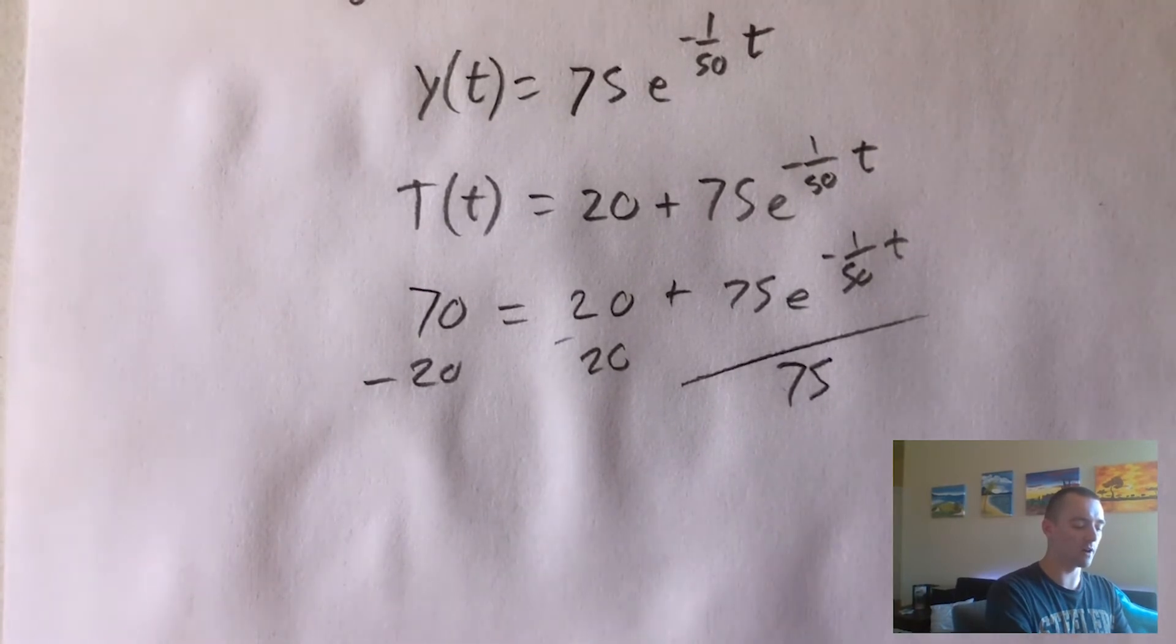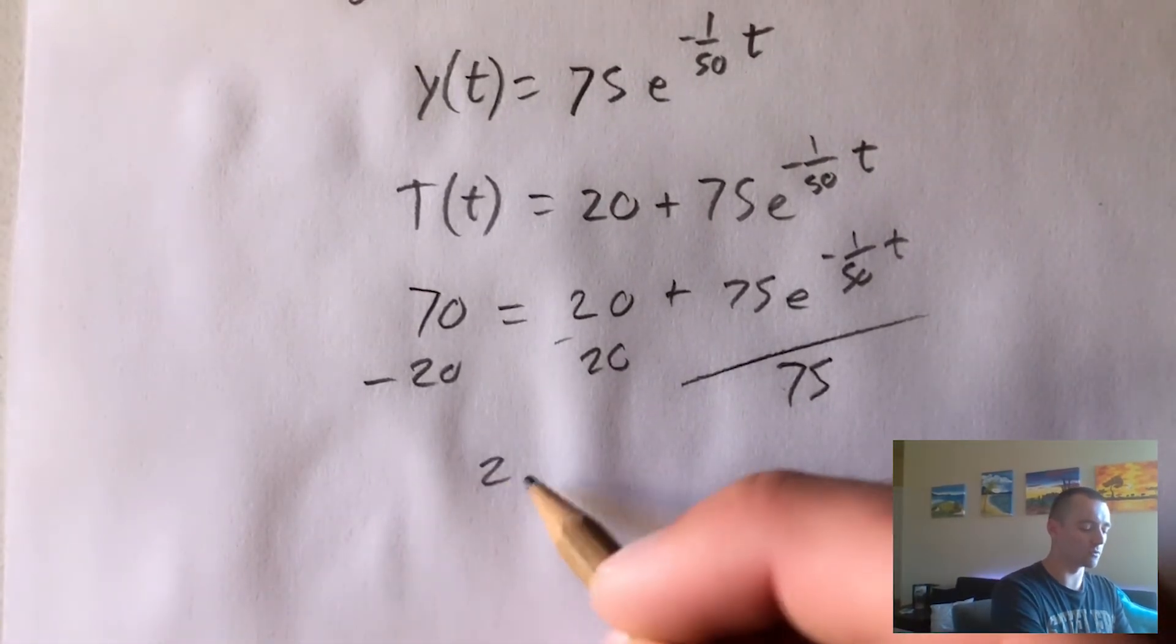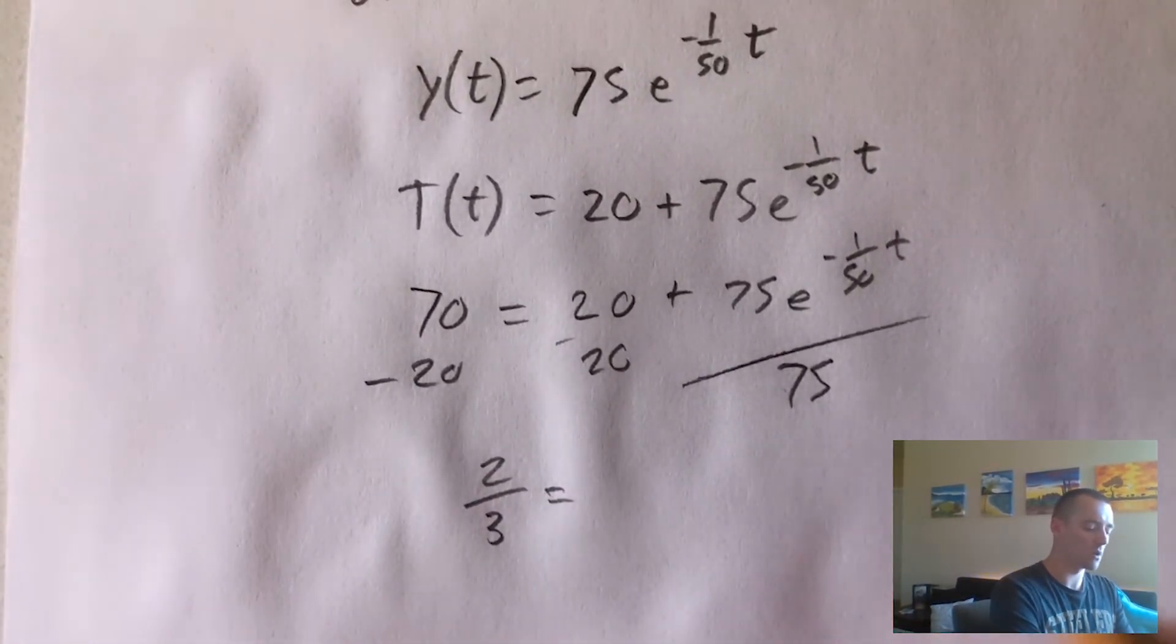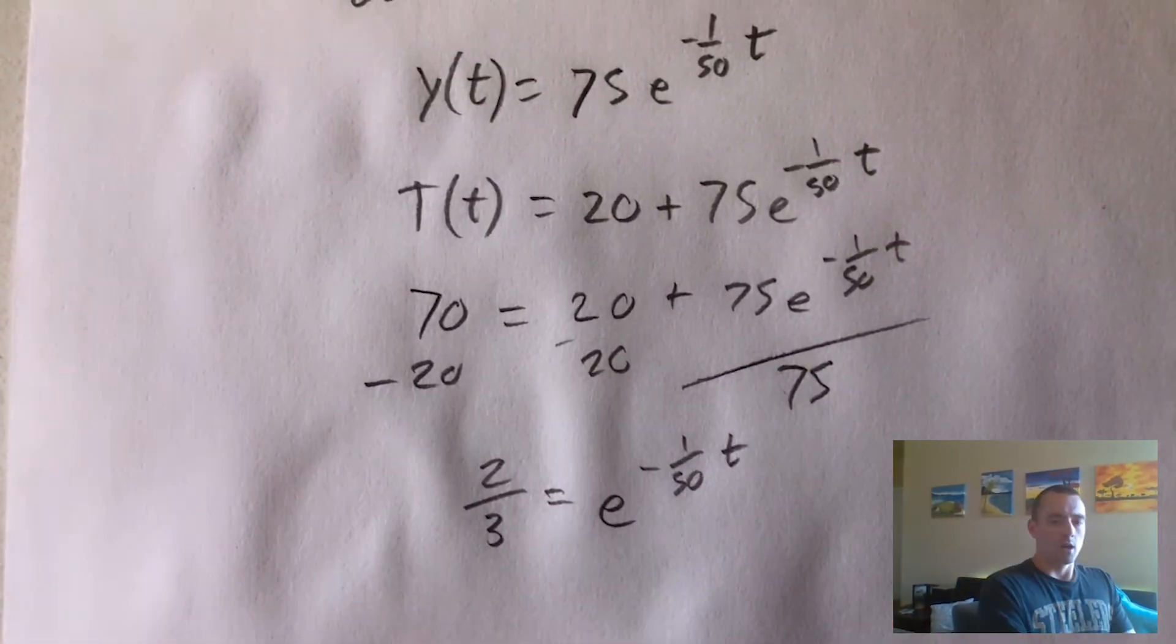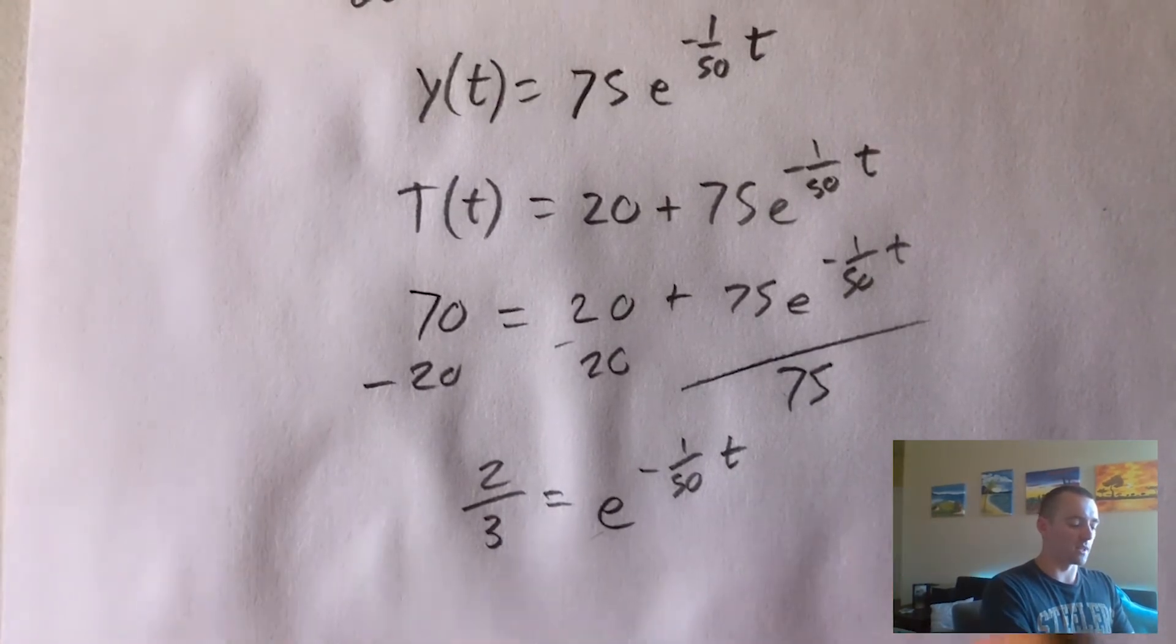And then we're going to have e to the negative 1/50 t. Then we would take the natural log of both sides to cancel the e. So that tells us the natural log of two thirds equals negative one over 50 t.